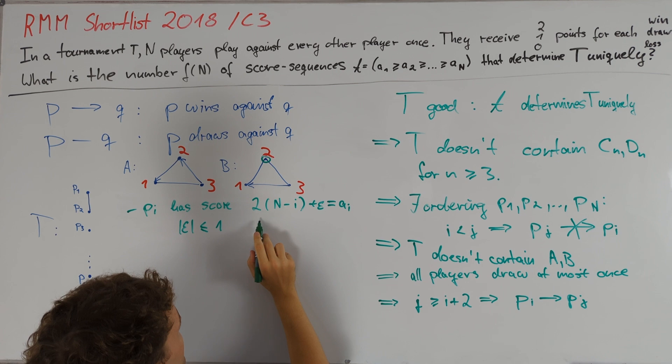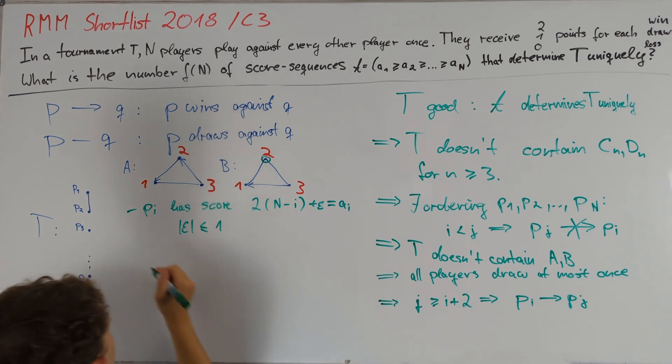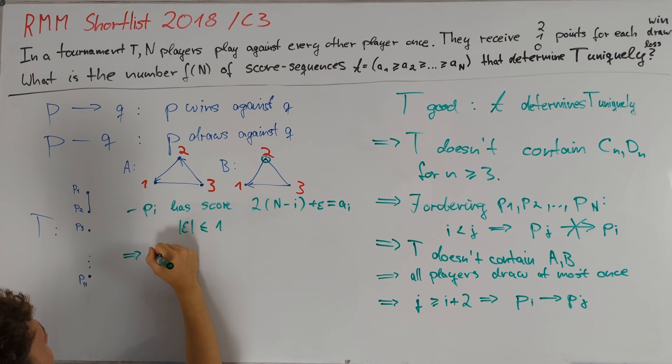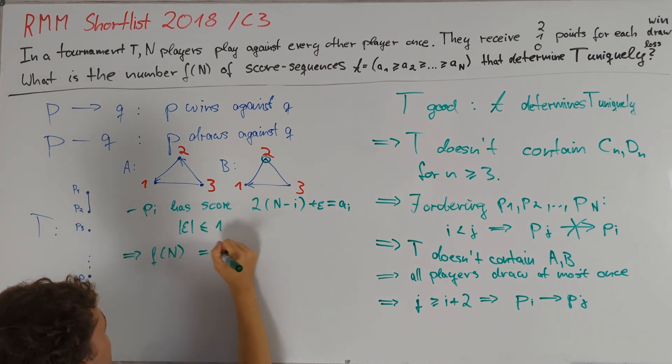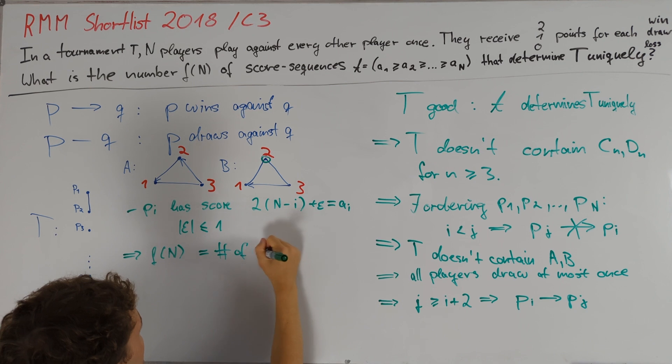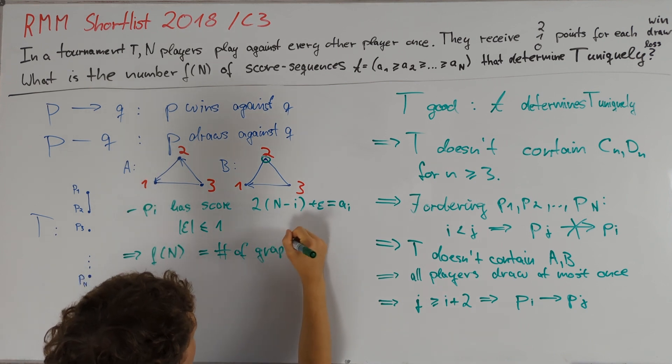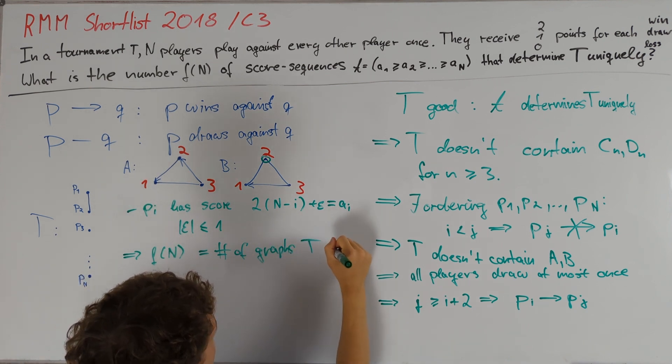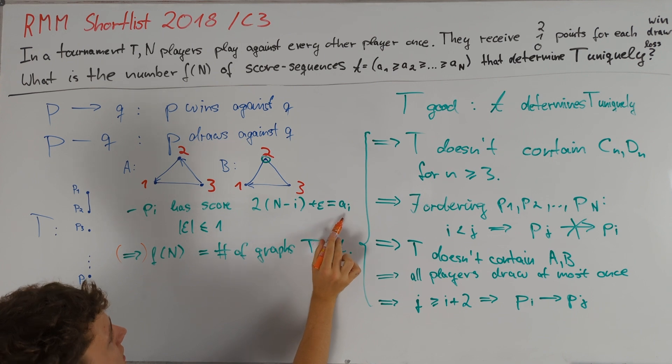If we can prove that any such score sequence determines the graph T uniquely, then it would follow that f also counts the number of graphs T such that all properties on the right hold. We will now prove by induction on the number of players that ai determines T uniquely.